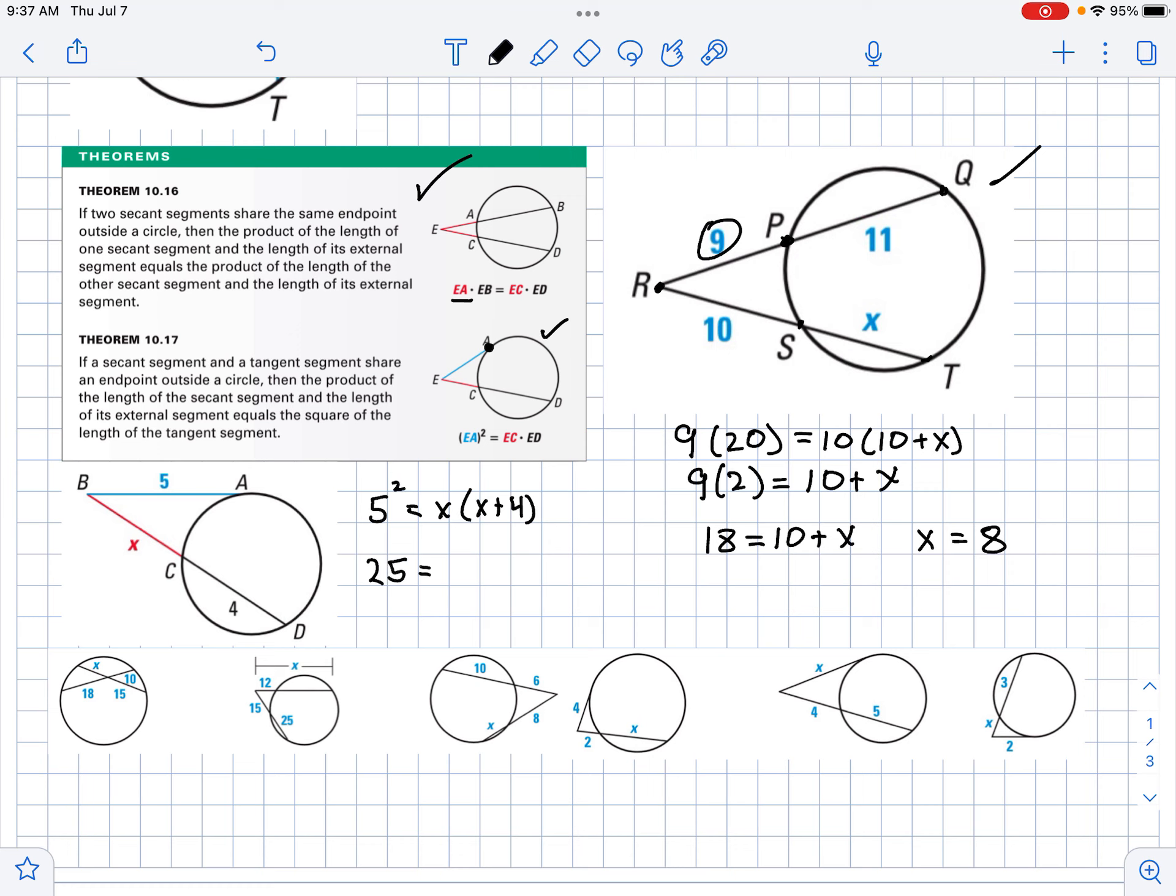So we've got 25 equals X squared plus 4X, and then we could solve from there. We have X squared plus 4X minus 25 equals 0. Then we would use the quadratic formula to solve that. We would need to break out the old quadratic formula.